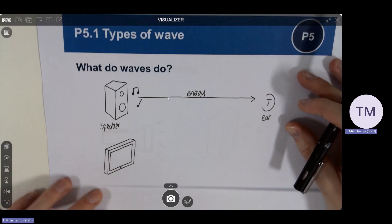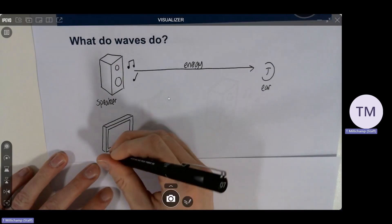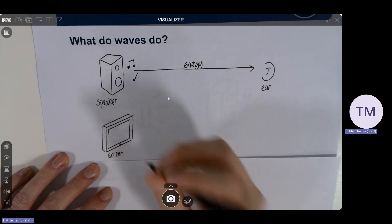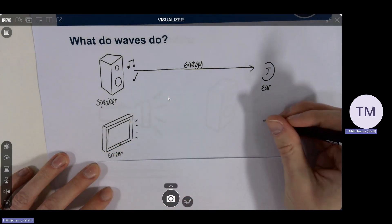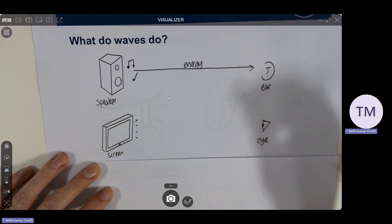Equally if we look at a screen, this is meant to be a picture of a screen, we know that it emits or gives out light and it means that we can see a screen even when we're really far away from it. That's meant to be an eye.